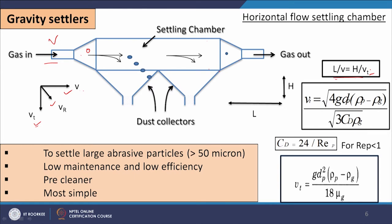The terminal settling velocity is vt = √(4g·dp·(ρp − ρg) / (3·Cd·ρg)). The drag coefficient Cd depends on the velocity of the gas stream — if velocity is higher it will be in turbulent; if velocity is less it will be in laminar flow. Up to certain Reynolds number we get laminar flow, and in that case Cd = 24/Rep (where Rep is the particle Reynolds number). Substituting Cd, vt converts to vt = g·dp²·(ρp − ρg) / (18·μg), which is the Stokes law expression for terminal settling velocity in the laminar zone.